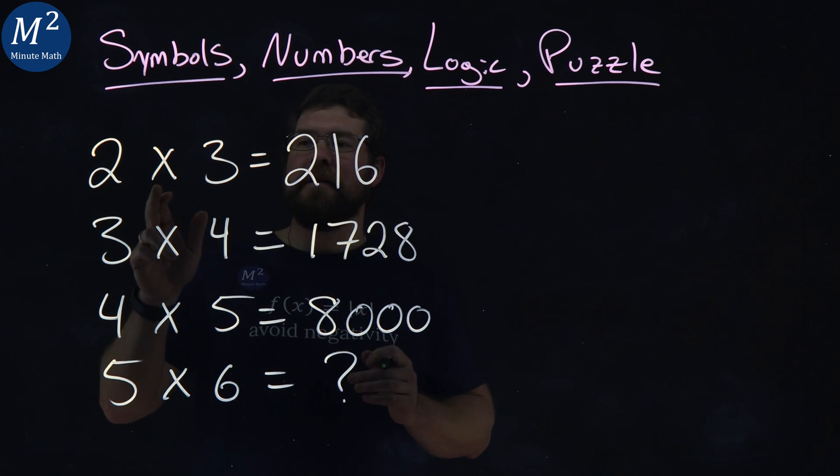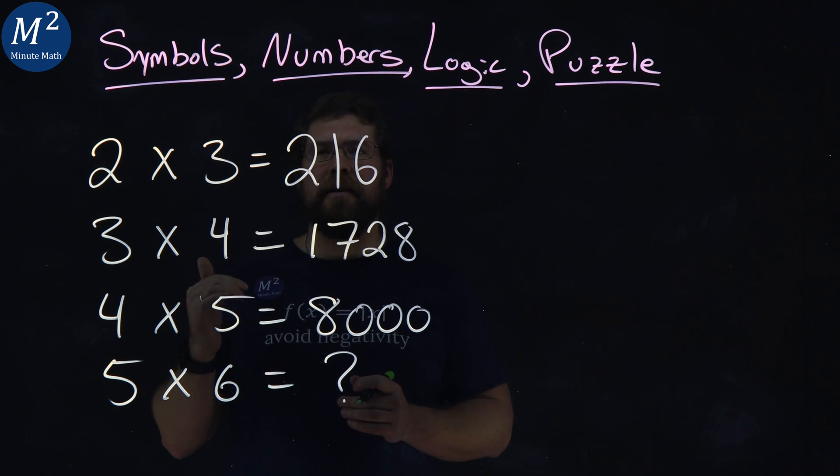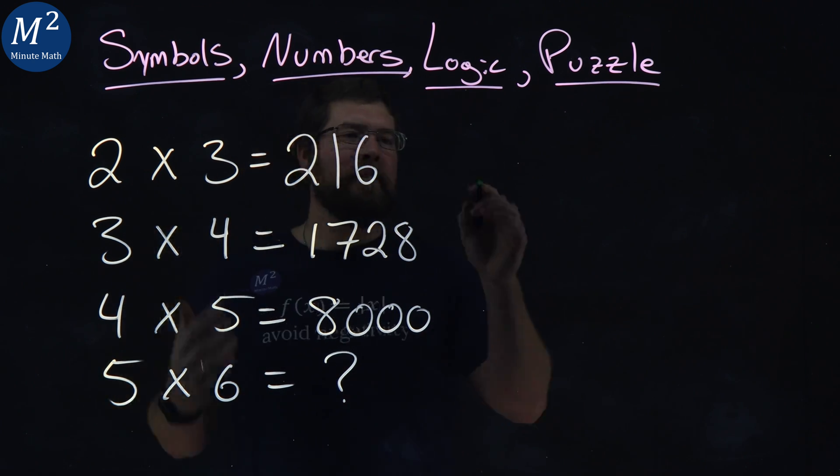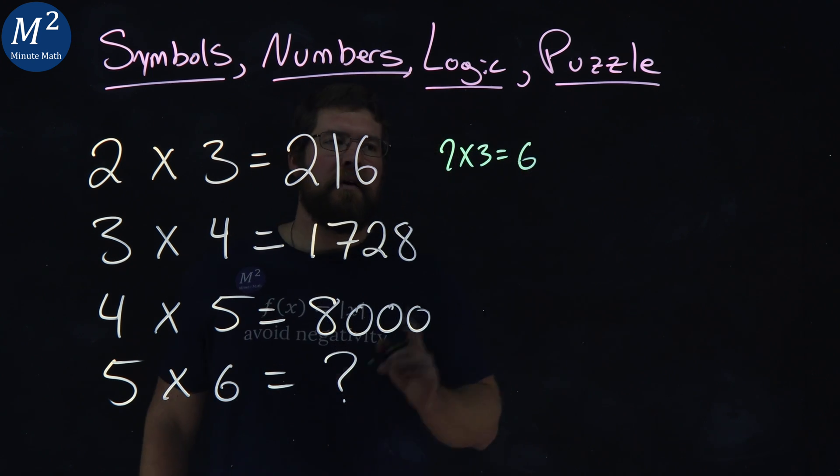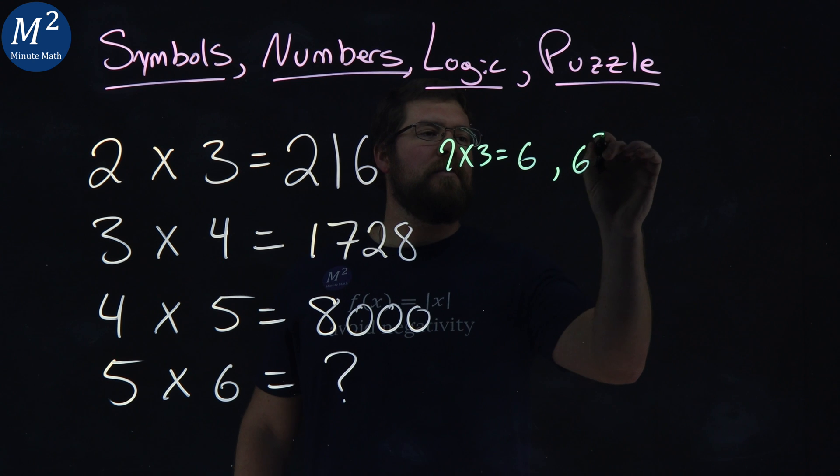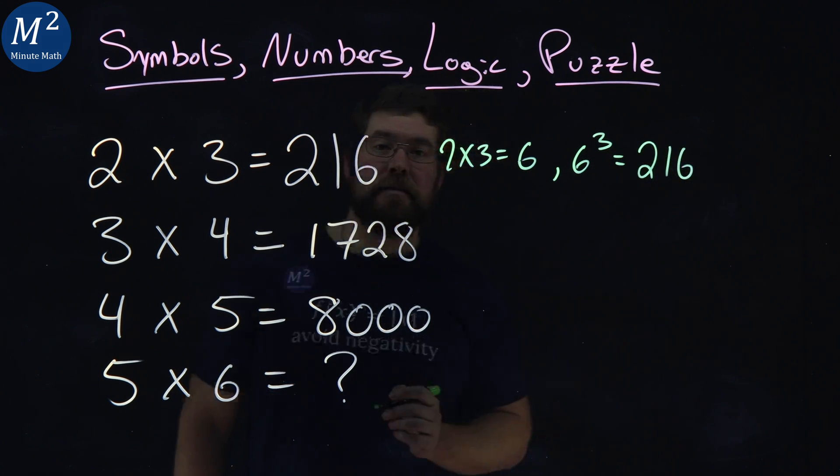All right, 2 times 3 equals 216. 2 times 3, we know that's 6. 6 cubed is what? 216.